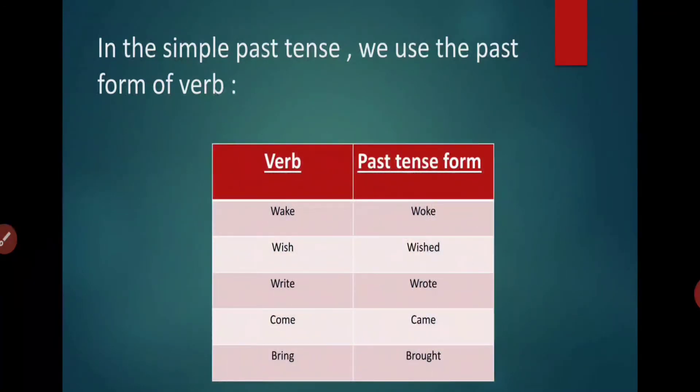So here are a few words which we read in the paragraph. Wake, the past form of wake is woke, wish, wished, right, wrote, come, came, bring, brought. So these are the words which we read in the paragraph. And these are the past tense of the verb.